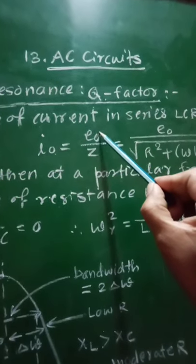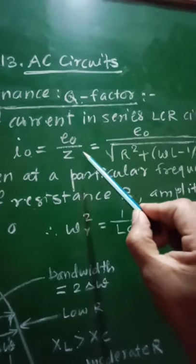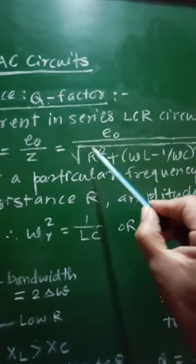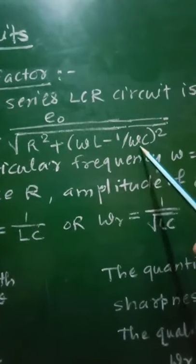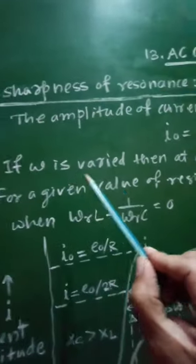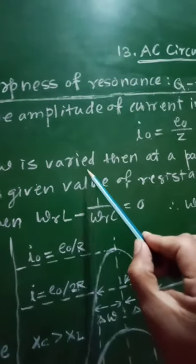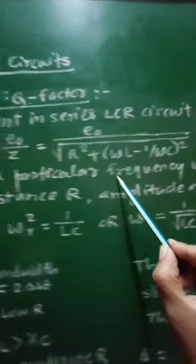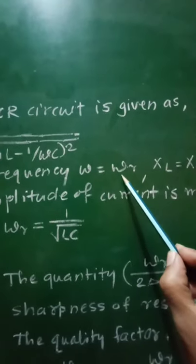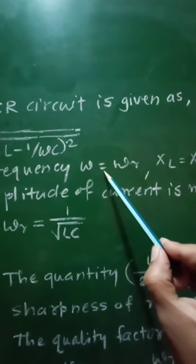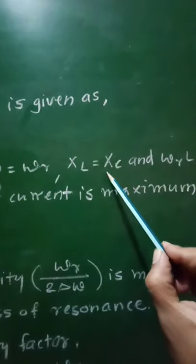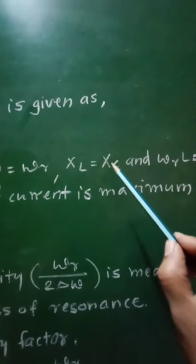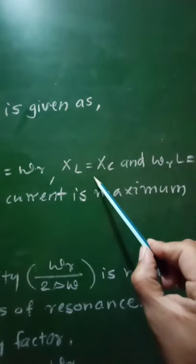Here E₀ is the peak value of EMF and Z is the impedance of the circuit. This can also be written as E₀ upon the square root of R² plus (ωL − 1/ωC)². If omega changes, then at a particular frequency ω equal to ωᵣ, that is at the angular resonant frequency, XL equals XC.